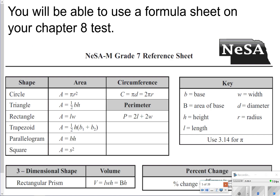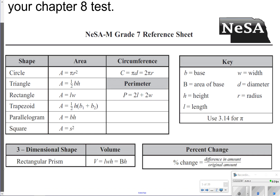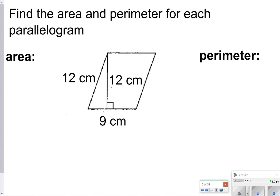You are going to be able to use this formula sheet for your Chapter 8 test. So what I'm going to be giving you are the formulas that you're going to be seeing on your formula sheet, just so you know how you're supposed to use them correctly. The first one you're just going to watch me do — I'm going to find the area and perimeter for each parallelogram. Just a quick reminder: you do get to use a calculator on this unit, which is awesome!